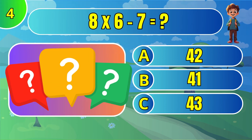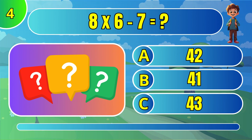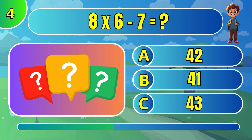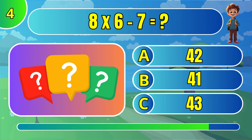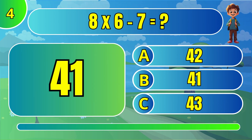What is 8 times 6 minus 7? The answer is B: 41.